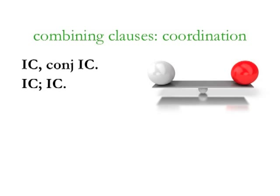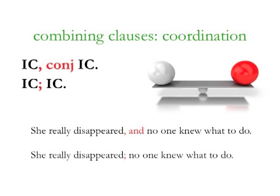'She really disappeared and no one knew what to do.' Both independent clauses are equal here. We could also say: 'She really disappeared; no one knew what to do.' This is the proper use of a semicolon. Notice that you cannot connect two independent clauses with just a comma — they need a semicolon or a comma and a conjunction.